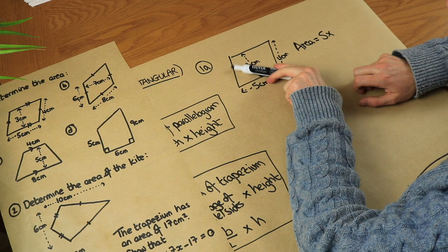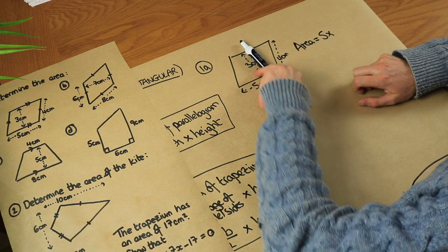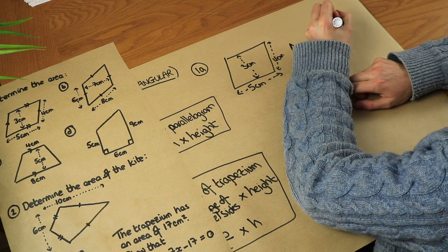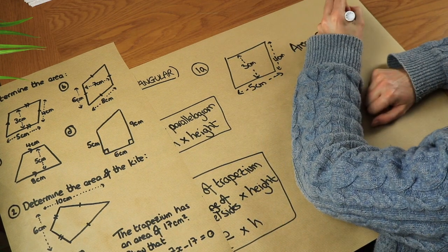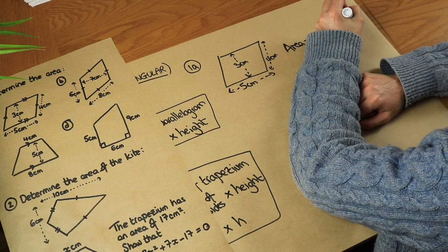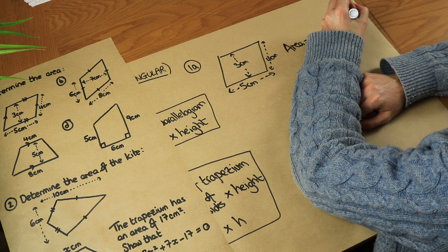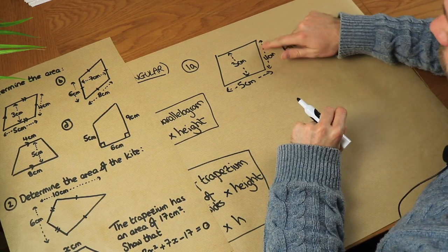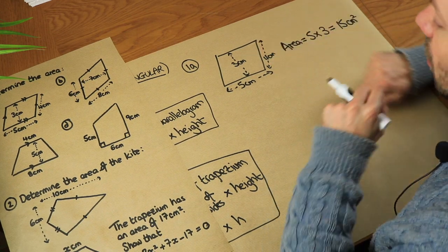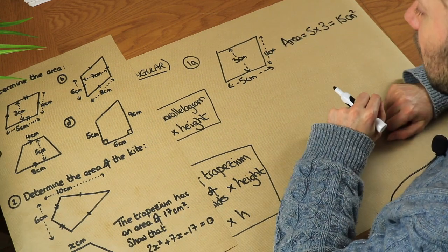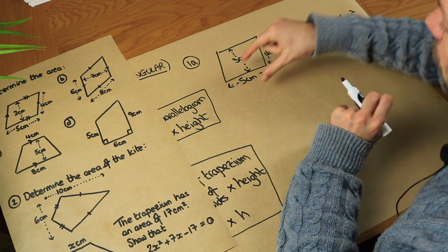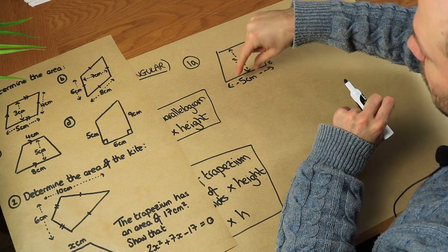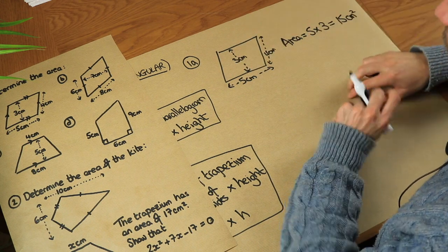Perpendicular to that five is the three. So we multiply by three and that gives us 15 centimetres squared. That four there is known as the slant height of the parallelogram — it's not the perpendicular height, which is perpendicular to the base.